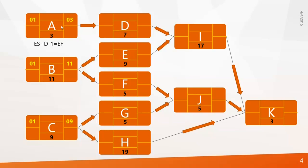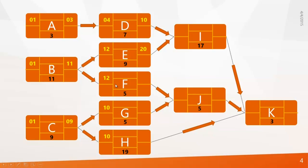Now at the next level: activity D is waiting for activity A to complete. We know A finishes at day 3, so D will start on day 4. The equation is early finish plus 1 gives early start of the next activity. Similarly, E and F start after B, which is day 12. G and H start at day 10. Now we can calculate early finish: D is 4 plus 7 minus 1 equals 10; E is 12 plus 9 minus 1 equals 20; F is 16; G is 14; and H is 28.